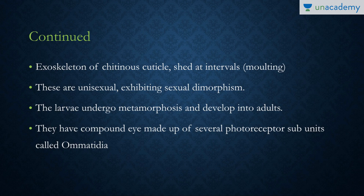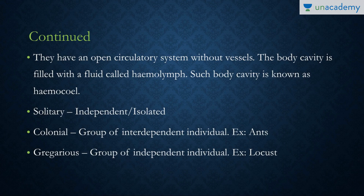Arthropods are usually unisexual and exhibit sexual dimorphism, meaning we can differentiate male from female by external appearance. The larvae undergo metamorphosis to develop into adults, so development is indirect. They may also have compound eyes with subunits called ommatidia. Their circulatory system is open, without vessels.